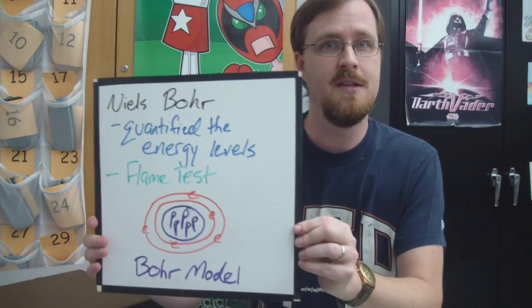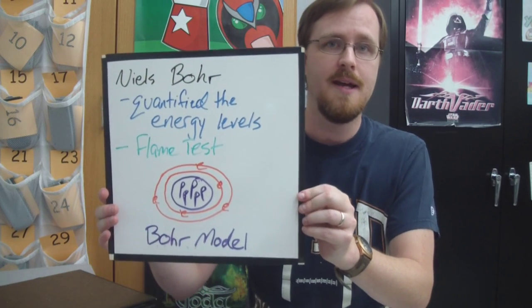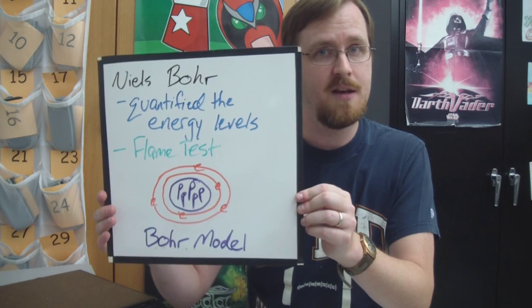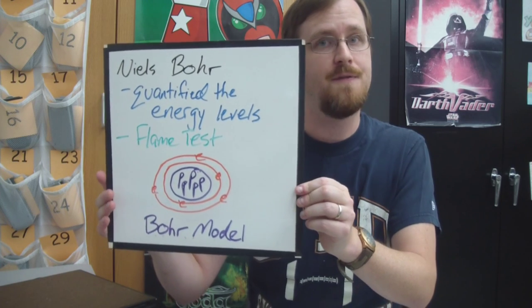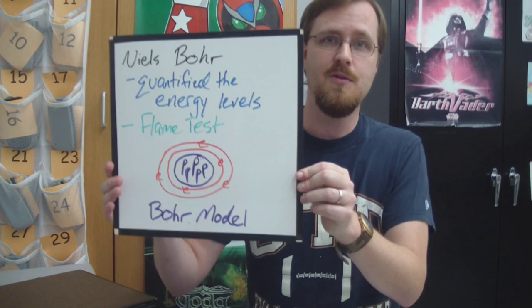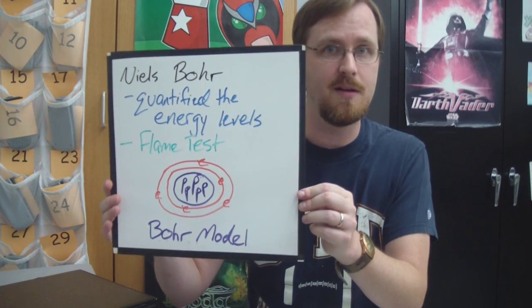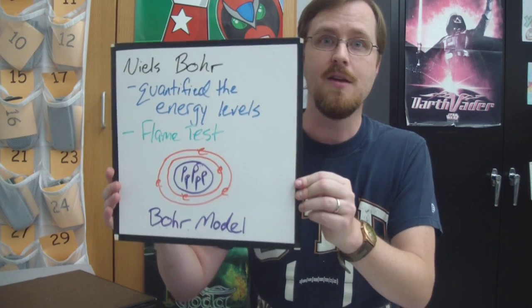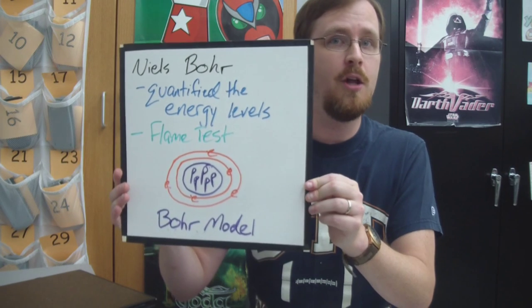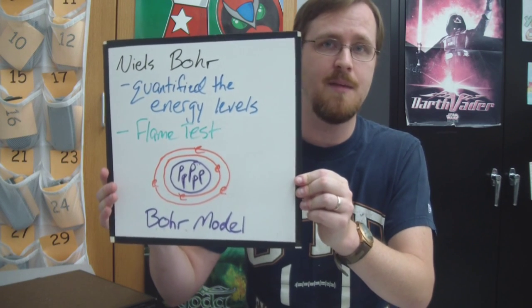The next scientist whose name is Niels Bohr did a much more sophisticated version of the flame test that you saw a couple videos ago. And using those flames, he was able to calculate and quantify all of the energy levels where the electrons can be found.